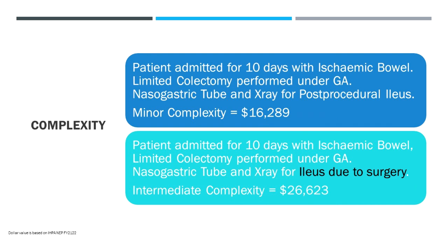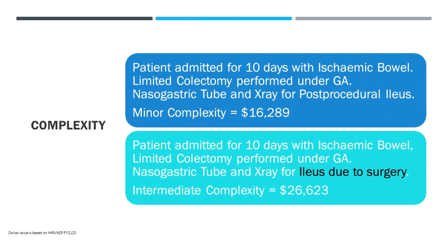Do you want to talk us through this one, Jane? Yeah, so this is another good example. This is someone who was in for 10 days, so that's a really long length of stay because in my units length of stay is generally under five days. We're pretty quick, pretty slick. They came in with ischemic bowel. We don't know how old they are but these people are often quite frail, they're often elderly, they've often got cardiovascular risk factors, otherwise they wouldn't get ischemic gut. Colectomy was performed, so it was quite severe, the ischemia. General anesthetic, they got a nasogastric tube and they had an x-ray because they had what was documented as post-procedural ileus. Now this is coming out as a minor complexity on the way it's documented currently.